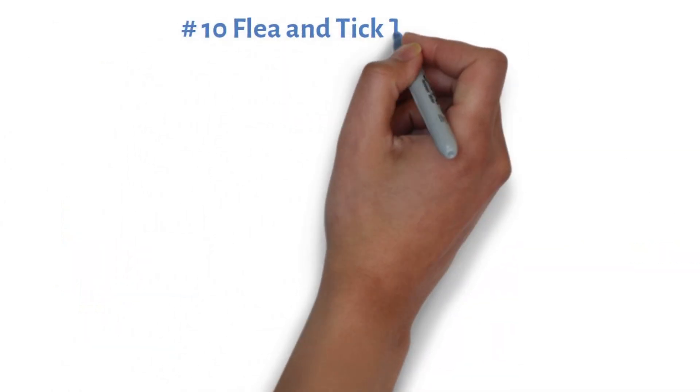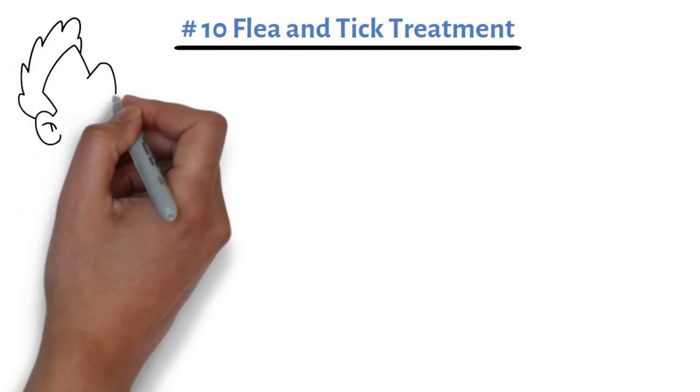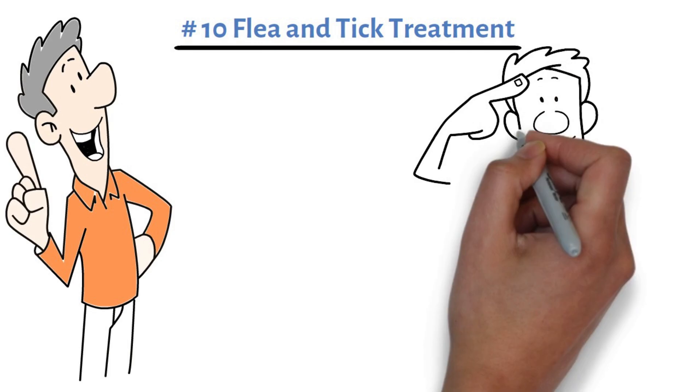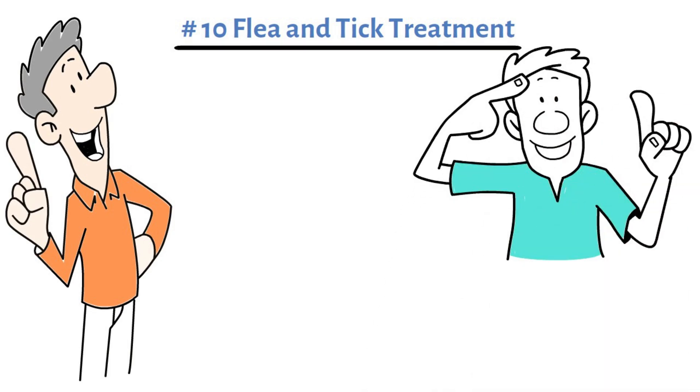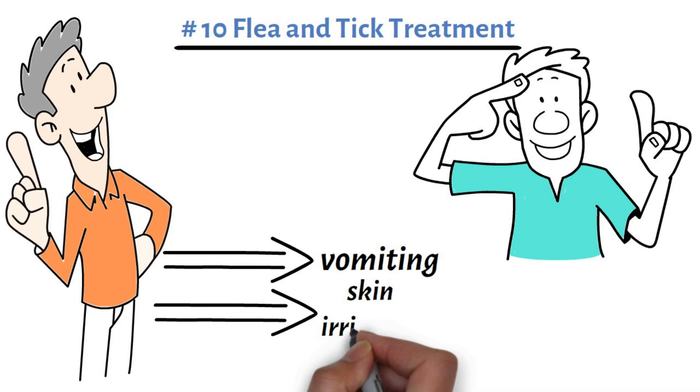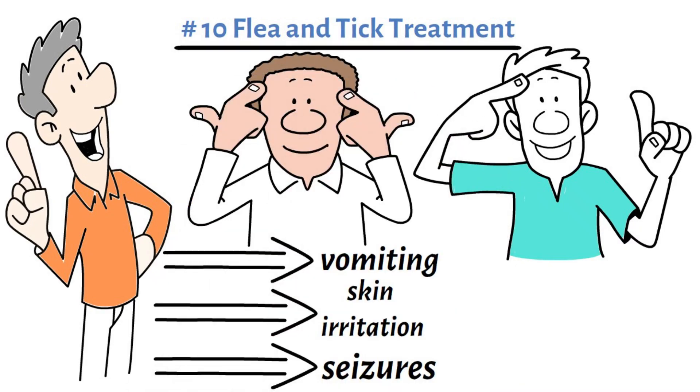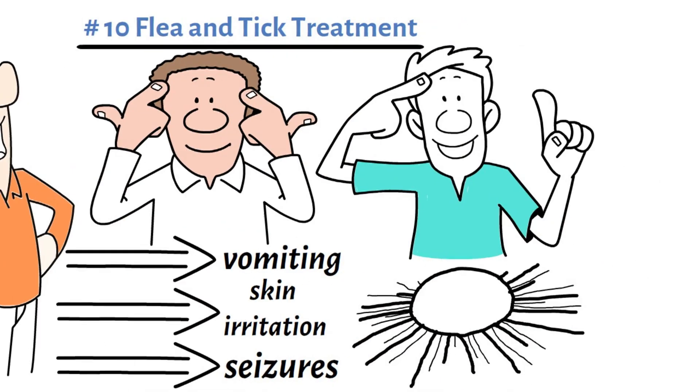Product number ten, flea and tick treatment. Flea and tick treatments for pets might seem essential, but they can contain fipronil, which has been linked to various health issues like vomiting, skin irritation, and even seizures. Fipronil is also considered a possible carcinogen and has been shown to cause tumors in lab animals.